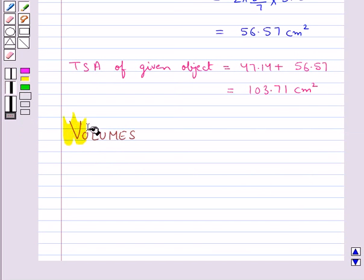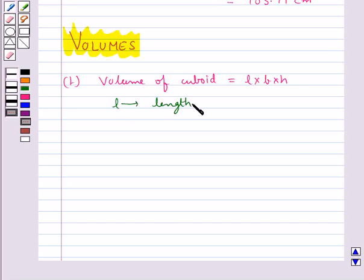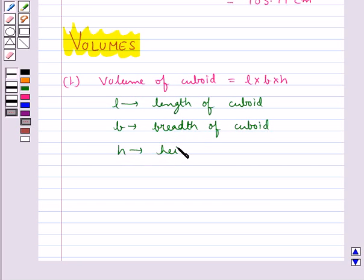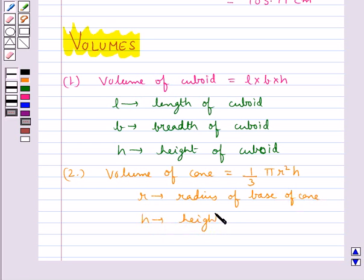Now we shall discuss the volumes of basic solids. Volume of a cuboid is given by L × B × H, where L is the length, B is the breadth, and H is the height of the cuboid. Then we have volume of a cone, given as (1/3)πR²H, where R is the radius of the base of the cone and H is the height of the cone.